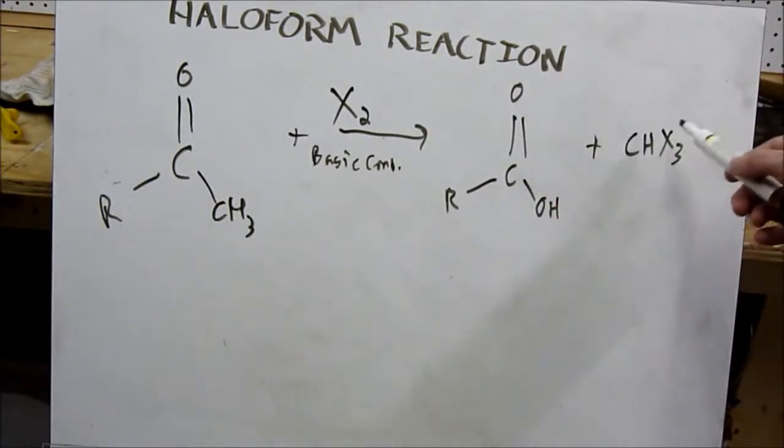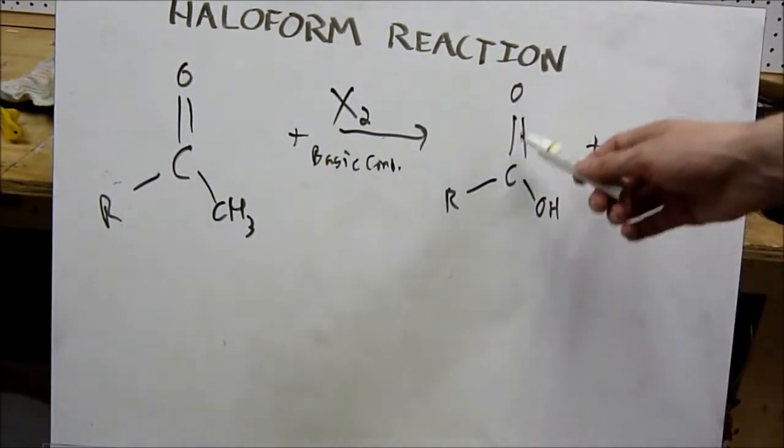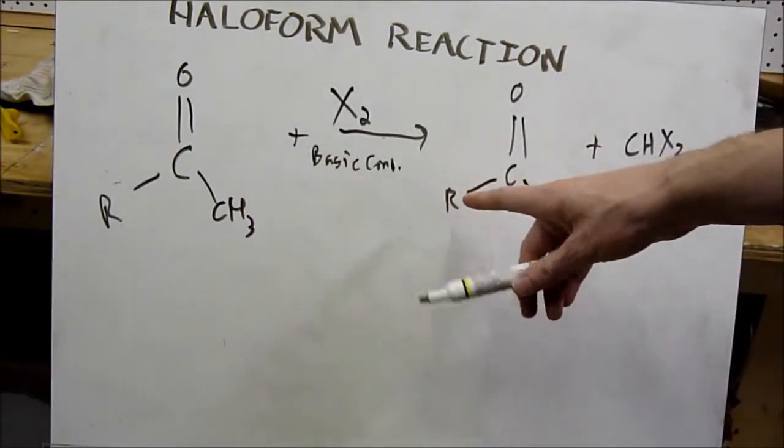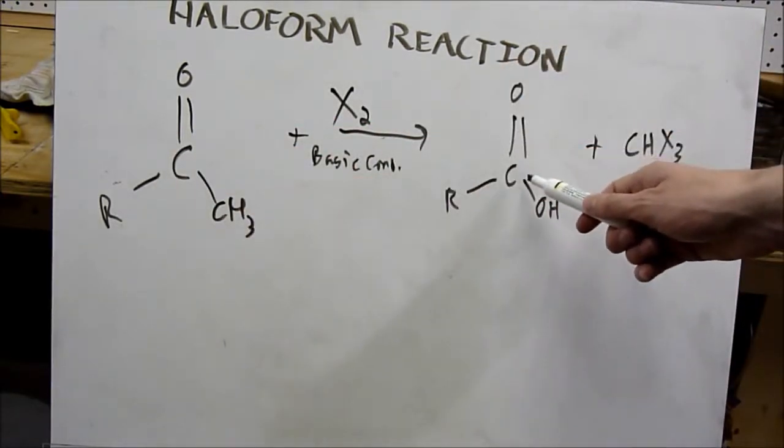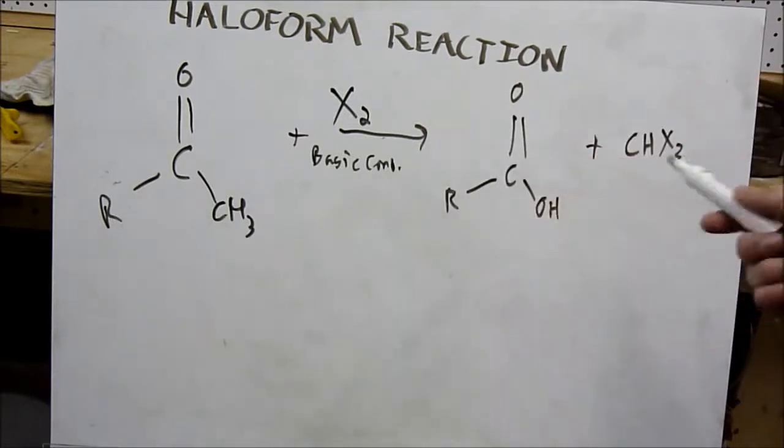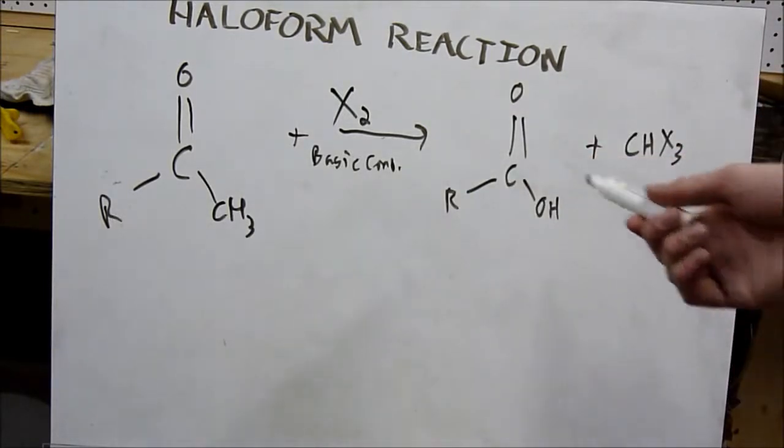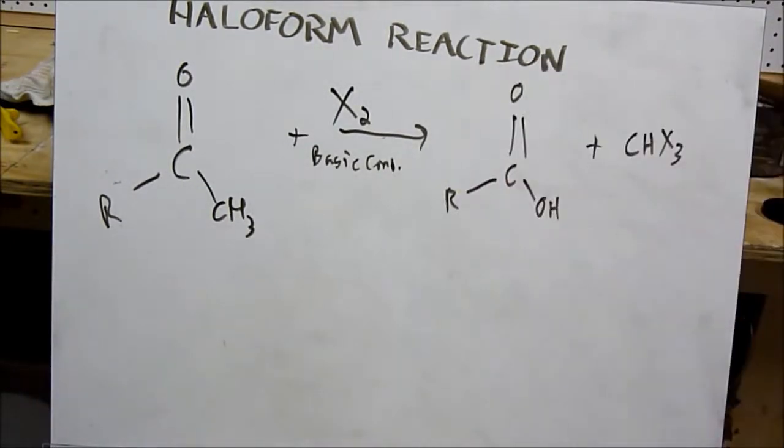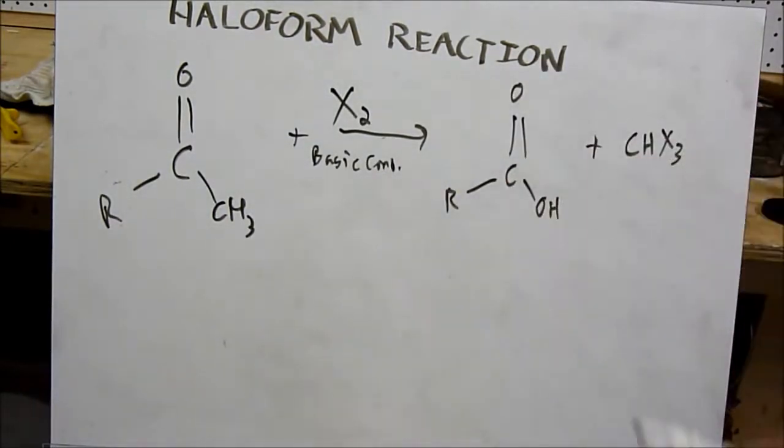You get CHCl3, which is chloroform, and the corresponding carboxylic acid. In this case, because we use methyl methyl ketone, we have ethanoic acid, also known as acetic acid. If I were to use methyl ethyl ketone, we'd end up with propanoic acid and chloroform.